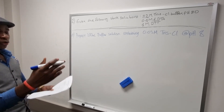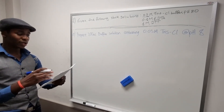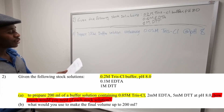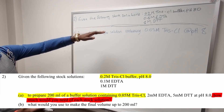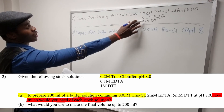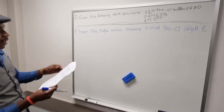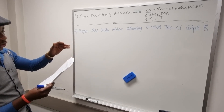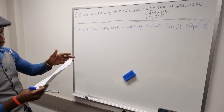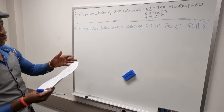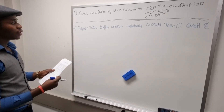We continue to work through our workshop questions — question two. It gives us the following stock solution, as listed, and asks us to prepare a 200 milliliter buffer solution containing 0.05 molar Tris chloride concentration.